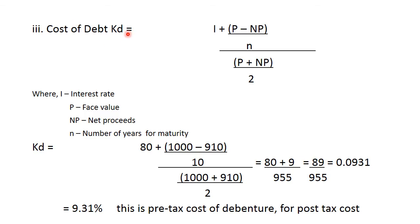Cost of debt. Now, in this case, what was there? A 1000 rupees debenture was sold at 950 rupees. Formula is I plus P minus NP upon N upon P plus NP upon 2. P is face value or par value. NP is net proceed. I is the rate of interest and N is the number of years.